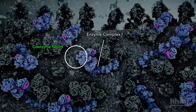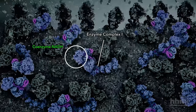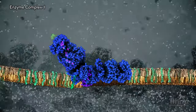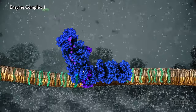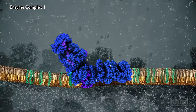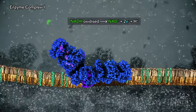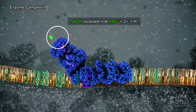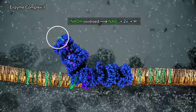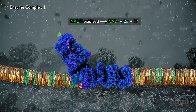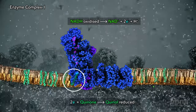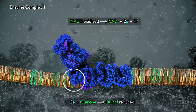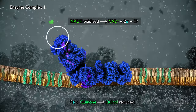The catalytic mechanism of enzyme complex I connects two different kinds of reaction. Coenzyme NADH is oxidized at one end of the enzyme, releasing two electrons that hop through the interior to coenzyme Q, which is reduced.